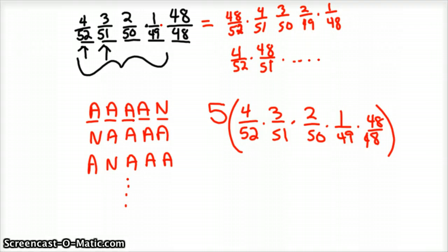Then you just reduce that. So four out of 52 is one out of 13, times five. Three out of 51 is one out of 17, one out of 25, one out of 49.